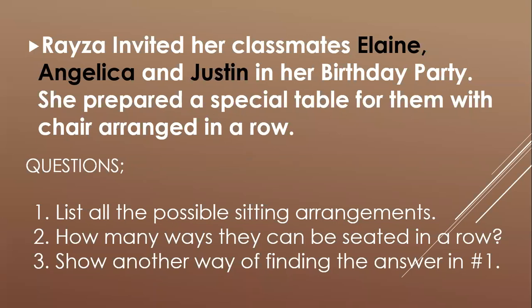For another example: Risa invited her classmates Elaine, Angelica, and Justine to her birthday party. She prepared a special table for them with chairs arranged in a row. The questions are: list all possible seating arrangements, find how many ways they can be seated in a row, and show another way of finding the answer — using systematic listing, fundamental counting principle, or a table.